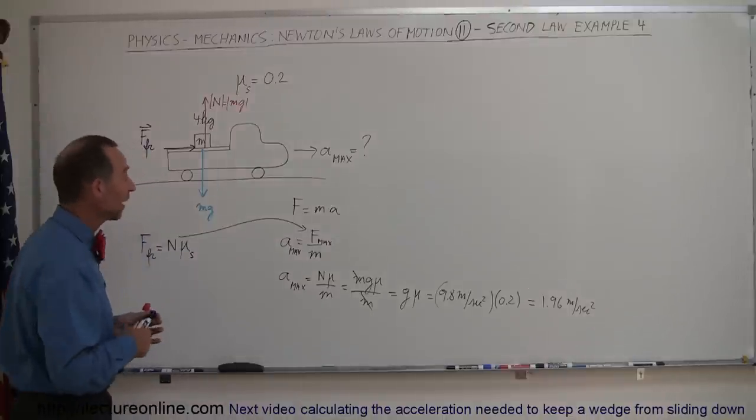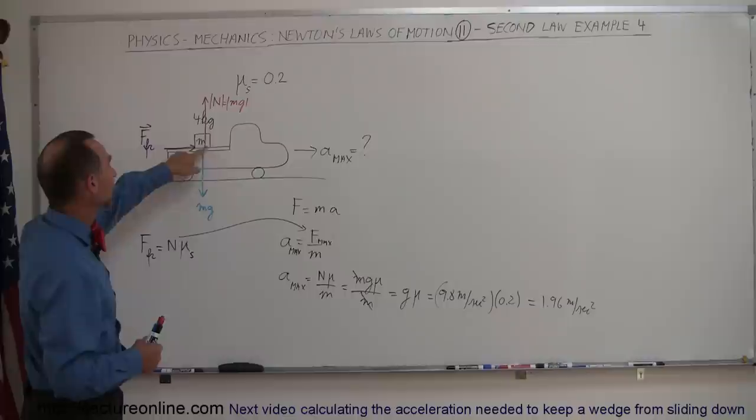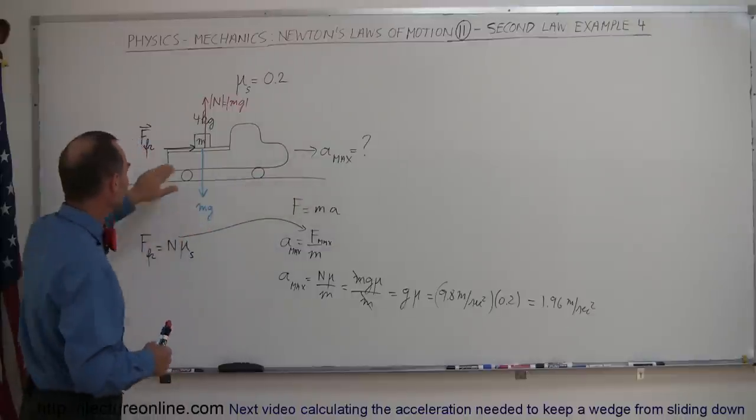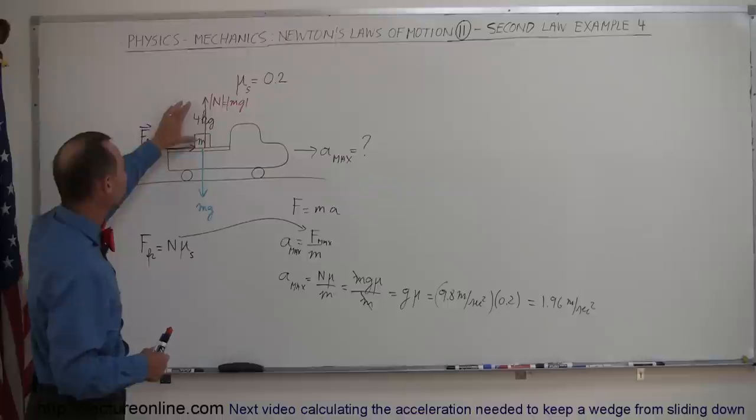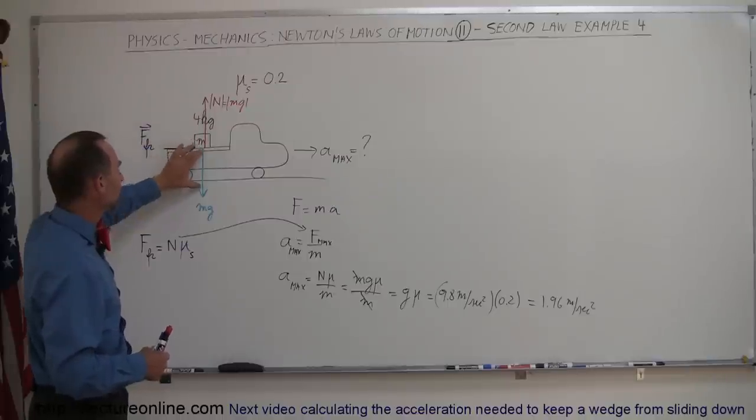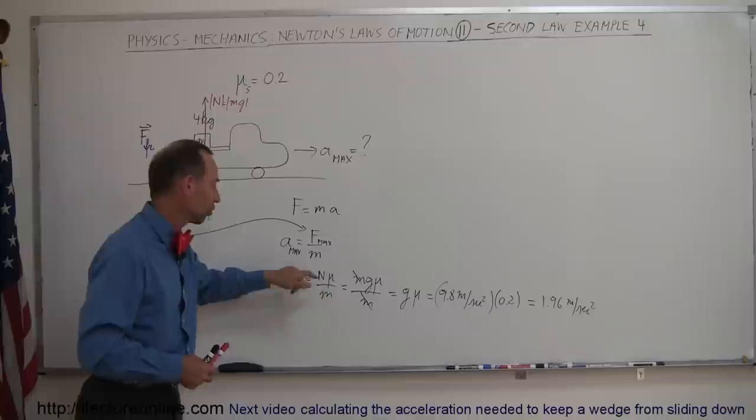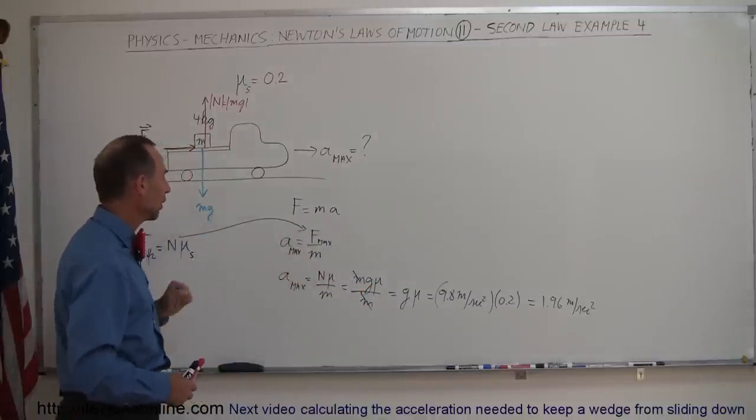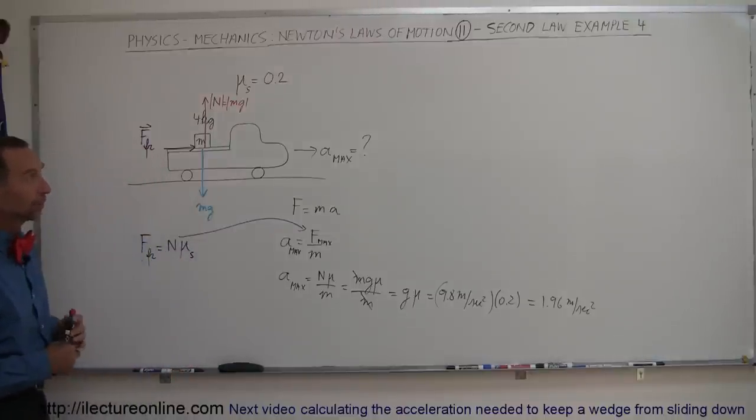So that is how you find the maximum acceleration. Again, draw a free body diagram, recognize all the forces acting on the box. The force required to accelerate the box forward, along with the truck, has to be the friction force. The friction force definition is the normal force times mu. The normal force is equal in magnitude, opposite direction to the weight. We plug that in here, mg is the normal force times mu divided by m, which comes from the F equals ma equation, Newton's second law, solve for the acceleration. And that's how you do that problem.